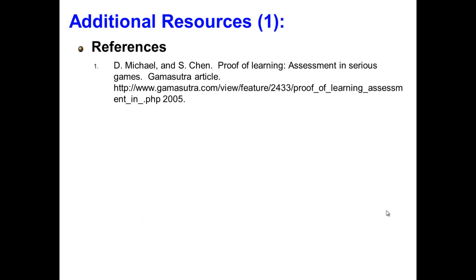This brings us to the end of this particular video clip, and just to point out the reference of Michael and Chen — this was an article that appeared in Gamasutra, titled "Proof of Learning: Assessment and Serious Games." I would strongly recommend you do take a look at it. It is available freely on the web.